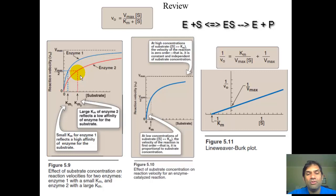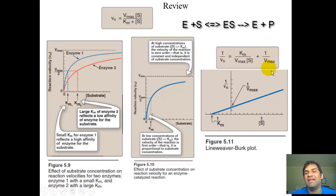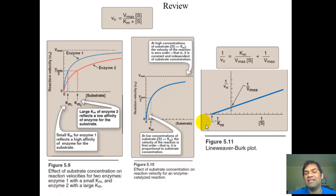To extract these parameters, we use a double reciprocal plot, also known as the Lineweaver-Burk plot, where you take the reciprocal of both axes and get a line. It's a linear transform with equation y = mx + b, where the slope is Km over Vmax, the y-intercept is 1 over Vmax, and the x-intercept is minus 1 over Km.